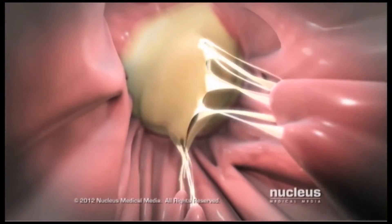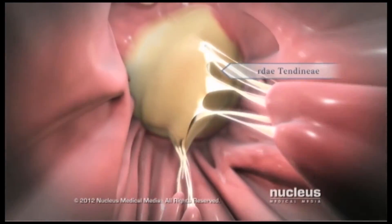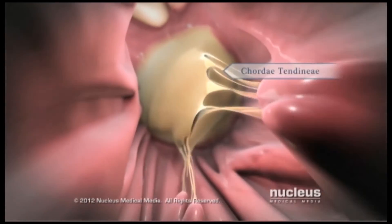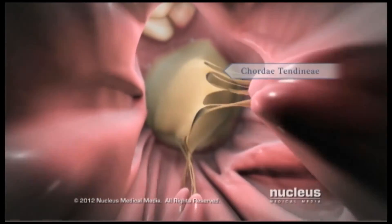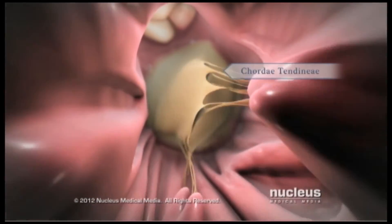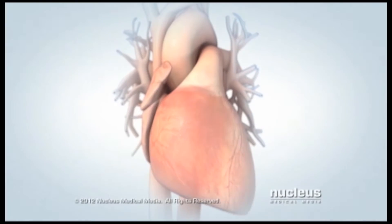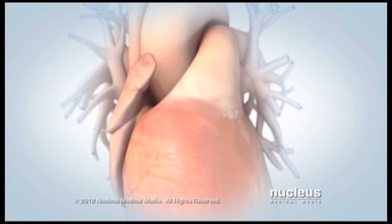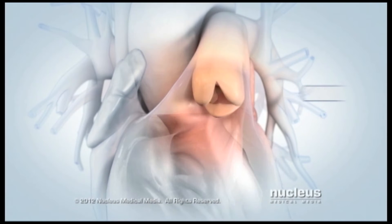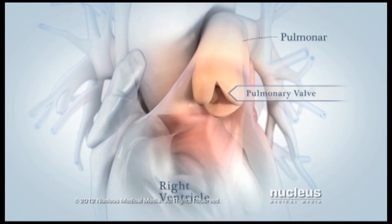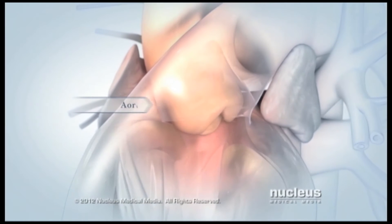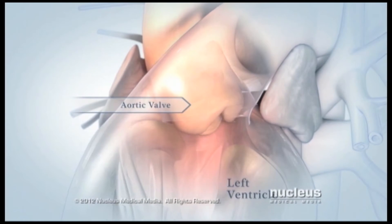Strong thin tissues, called chordae tendineae, hold your valves in place during the forceful contractions of your ventricles. Blood leaving the ventricles passes through another set of valves: the pulmonary valve between your right ventricle and pulmonary trunk, and the aortic valve connecting your left ventricle and aorta.